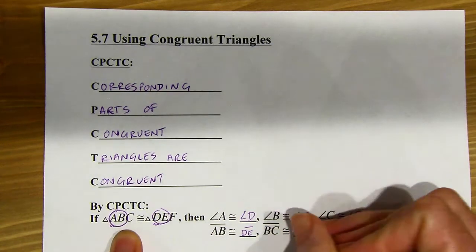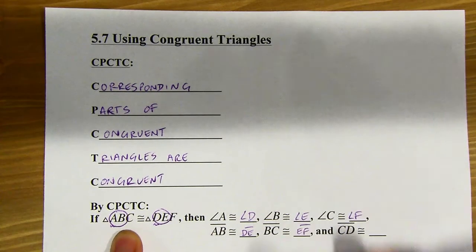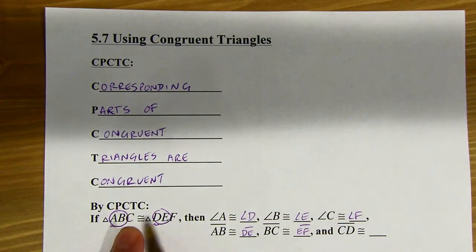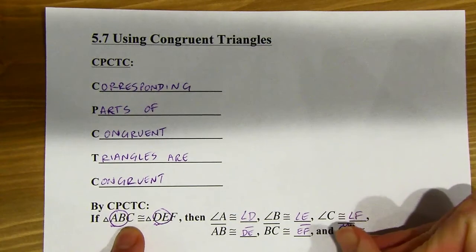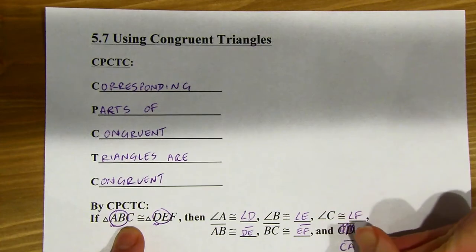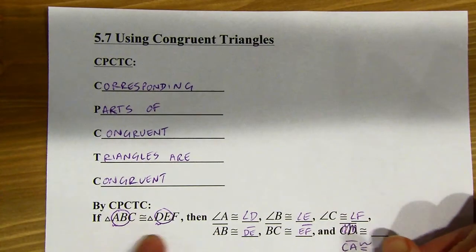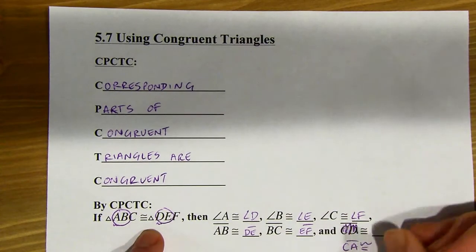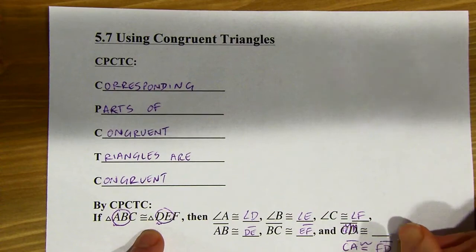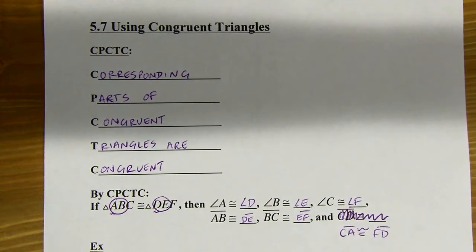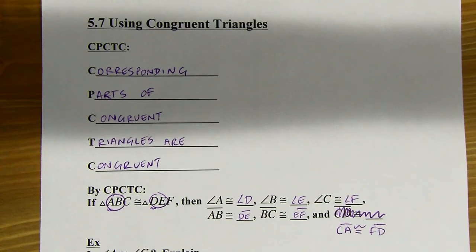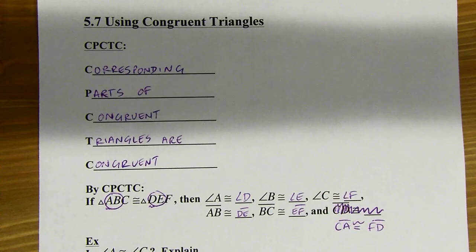BC would line up with EF, and CA is going to be congruent to FD — that's the third and first. I'll fix that on the copy you have. So let's put CPCTC to use. Corresponding parts of congruent triangles are congruent — CPCTC.